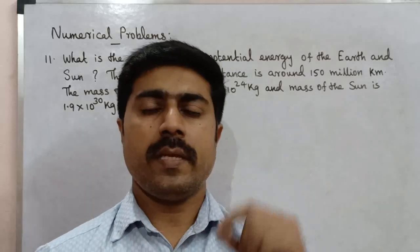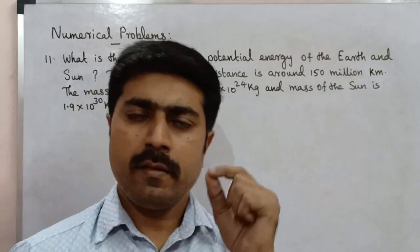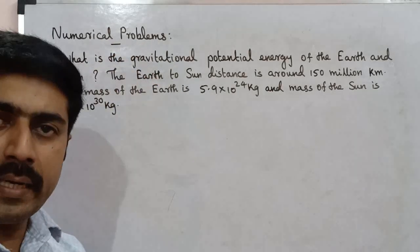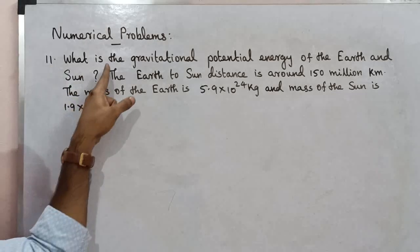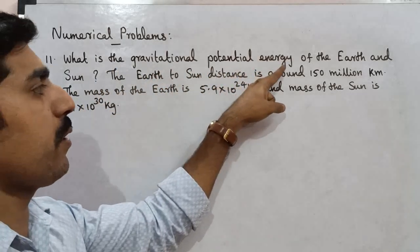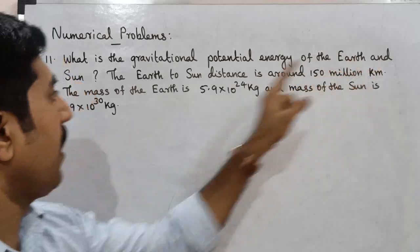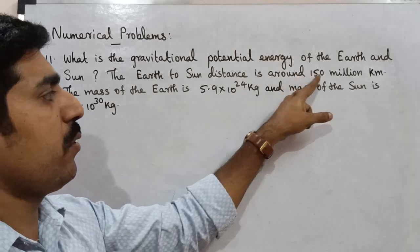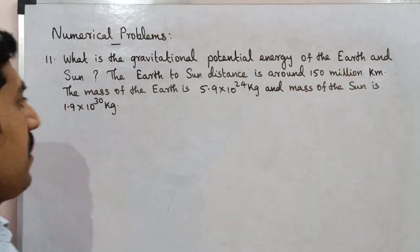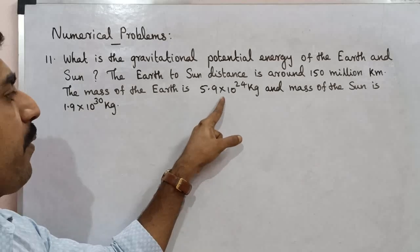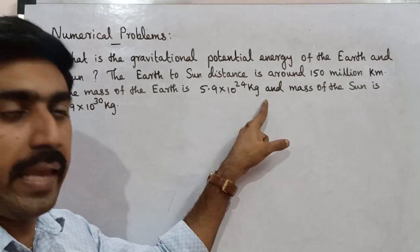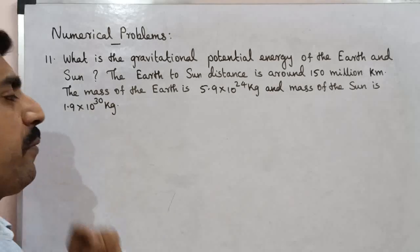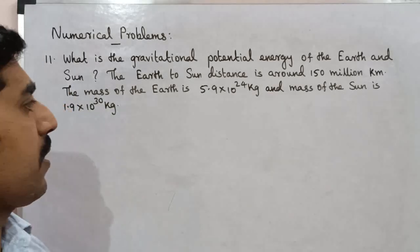Hi students. What is the gravitational potential energy of the Earth and Sun? The Earth-to-Sun distance is around 150 million kilometers. The mass of the Earth is 5.9 into 10 power 24 kg and mass of the Sun is 1.9 into 10 power 30 kg. So let's see.